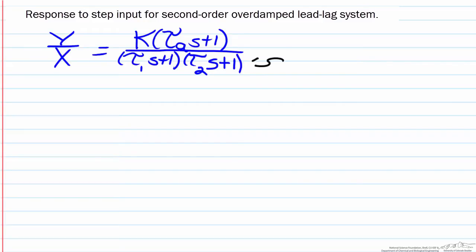It's second order because we have s squared in the denominator. Since it's overdamped, that means tau one and tau two are both positive numbers. We also have a time constant in the numerator which is equal to tau a.